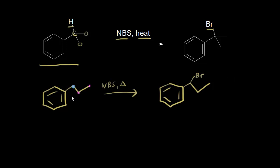Looking at the hydrogens attached to this carbon: we started off with two hydrogens attached to that benzylic carbon, and we're left with only one of those hydrogens. So the bromine took the place of one of those benzylic hydrogens there.